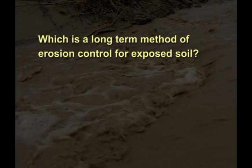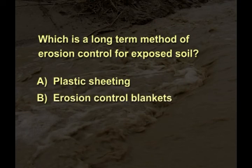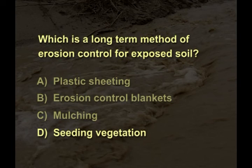Quiz question: Which is a long-term method of erosion control for exposed soil? A. Placing plastic sheeting over the exposed soil. B. Placing erosion control blankets over exposed soil. C. Placing mulch over exposed soil. D. Seeding and growing vegetation. The answer is D — seeding and growing vegetation. The other options may be used for the duration of the project, but growing vegetation is the preferred method of long-term erosion control.